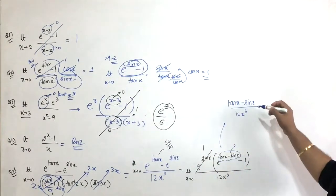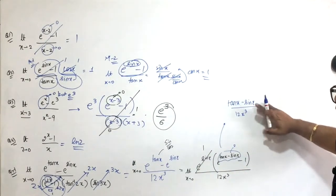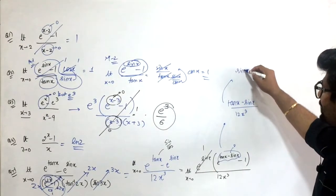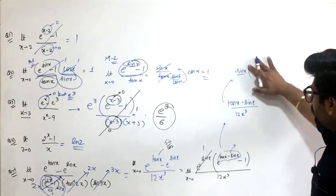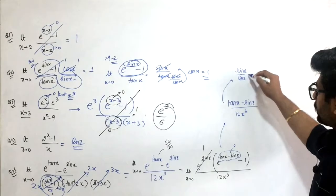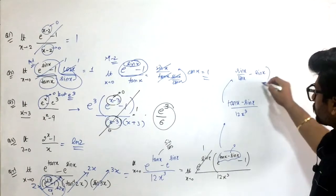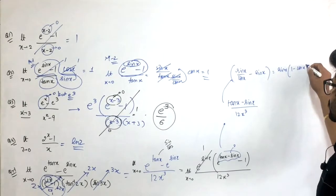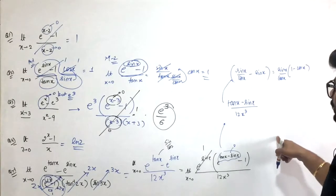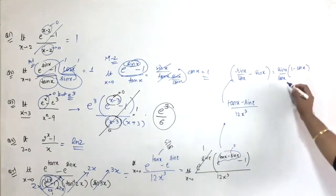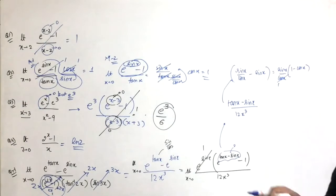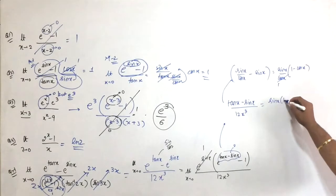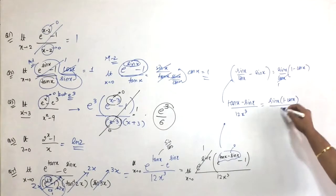Now tan x minus sine x is written. I'll simplify the numerator. Tan x minus sine x - take sine x common: sine x times (1 minus cos x upon cos x). When limit x approaches 0, cos x goes to 1 minus something upon cos x will simplify. So it's sine x times 1 minus cos x upon cos x, divided by 12 x cubed. Which is sine x times 1 minus cos x upon 12 x cubed cos x.